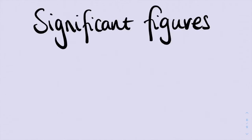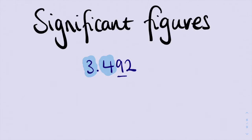So if I have the number 3.492 and I want to round this to two significant figures, we're going to look at the first two numbers. So we've got one significant figure, two significant figures, but this 9 here is our critical digit and it's going to dictate what happens to our final significant figure. So we're going to have 3 stay the same, but because 9 is bigger than 5, the 4 is going to turn into 5, so it gets rounded up 1.